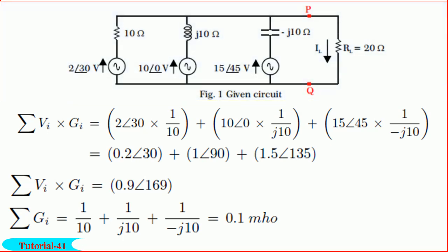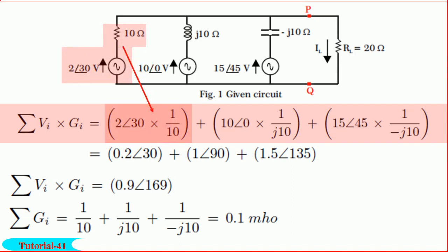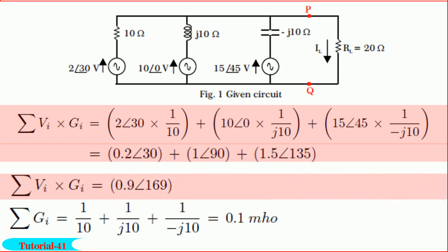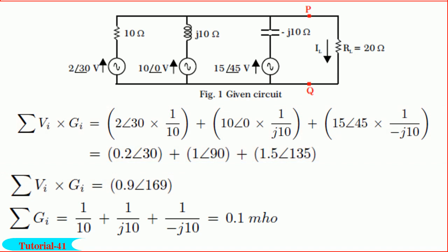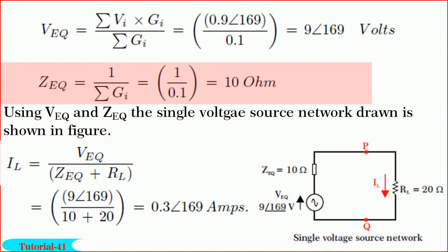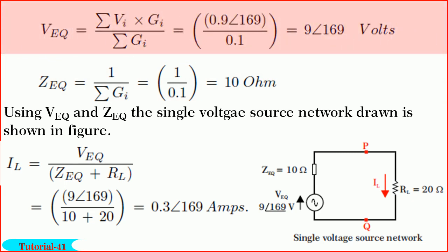So let us now find V-equivalent and Z-equivalent. Observe the given network. Summation of V_i·G_i is equal to 2∠30 into 1/10, plus 10∠0 into 1/(j10), plus 15∠45 into 1/(−j10). By solving, we get summation of V_i·G_i is equal to 0.9∠169. And summation of G_i is equal to 1/10 plus 1/(j10) plus 1/(−j10), and by solving it we get summation of G_i is equal to 0.1.